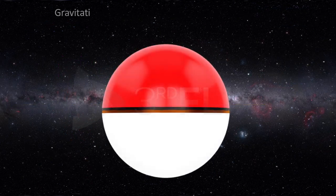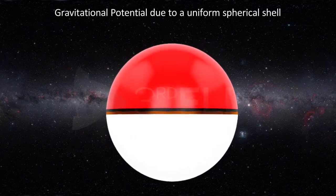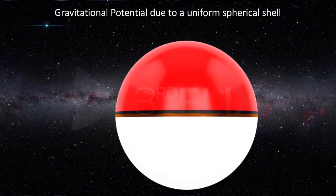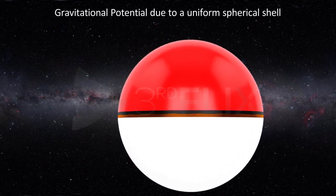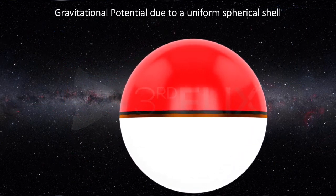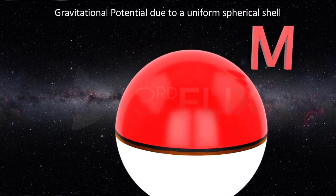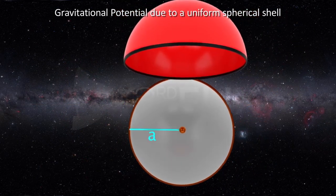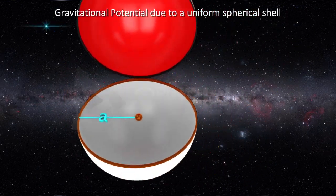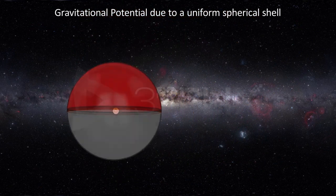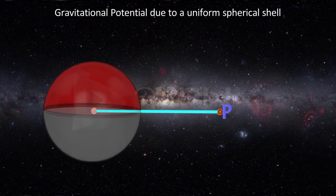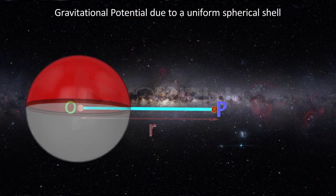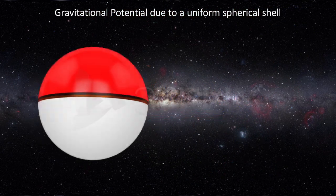Gravitational potential due to a uniform spherical shell. Consider a uniform spherical shell of mass m and radius a. Let's calculate the gravitational potential at P, which is at a distance r from the center O of the shell.